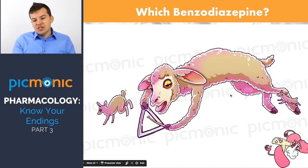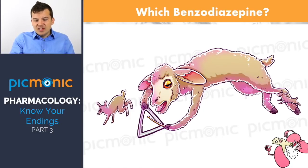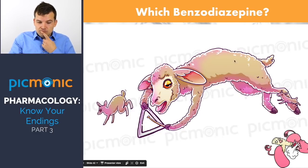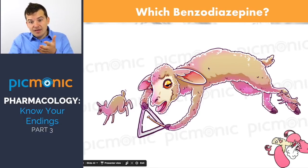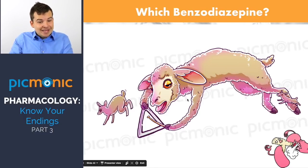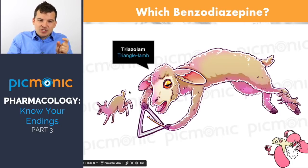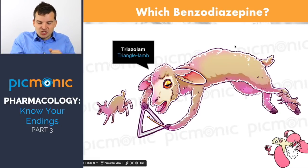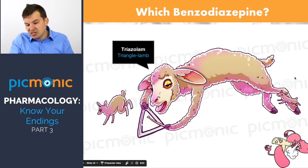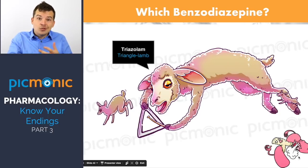To show the magic of Picmonic: if I show you an image of a triangle on a lamb — tri, lamb — triazolam. You can see how images help you recall these names. Triazolam is a sleep medication, which is why there are jumping sheep inside the image. But again, we worry about respiratory depression — those inflated lungs in the image are there as a reminder.